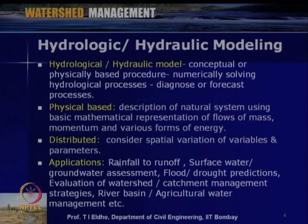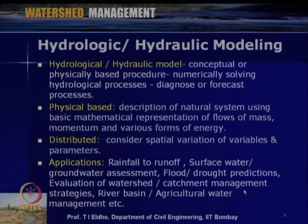Various hydrologic processes considered include rainfall, evapotranspiration, interception, infiltration, and runoff. Models are called physically based since the description of the natural system uses basic mathematical representations of flows of mass, momentum, and various forms of energy — the laws of physics like conservation of mass, conservation of momentum, and conservation of energy. We use the continuity equation based on conservation of mass, the equation of motion based on conservation of momentum, and Bernoulli's theorem based on conservation of energy. These models are called distributed since the spatial variation of variables and parameters is undertaken in the model.